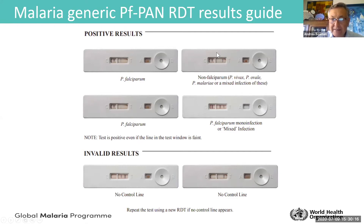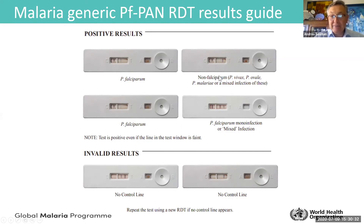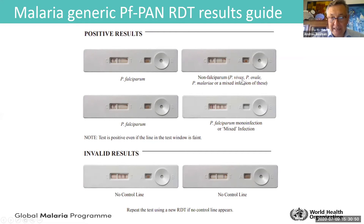If there is only one test line far from the control line, this is the PAN line without the falciparum line. This means the test is malaria positive but with no falciparum — a non-falciparum result. It could be vivax, ovale, malariae, or a mixture of these three. In many of your countries, vivax malaria is present, so that is the most likely result.